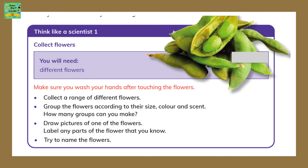Think like a scientist: collect flowers. You will need different kinds of flowers — make sure you wash your hands after touching them. Collect a range of different flowers and group them according to their size, color, and scent. How many groups can you make? Draw pictures of one of the flowers and label any parts that you know. Try to name the flowers.